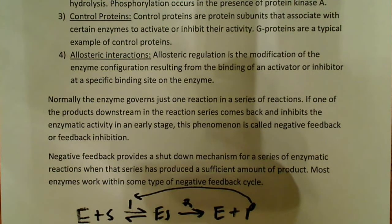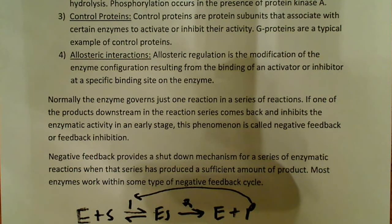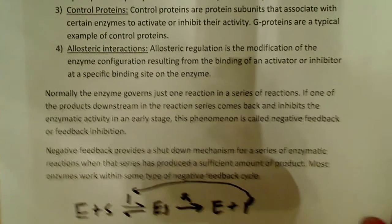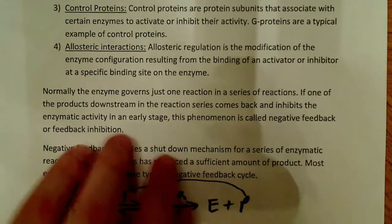Negative feedback provides a shutdown mechanism for a series of enzymatic reactions when the series has produced a sufficient amount of product. Most enzymes work within some type of negative feedback cycle. This sort of feedback inhibition is common in all areas — it's common in neurobiology and certainly common in biochemistry.